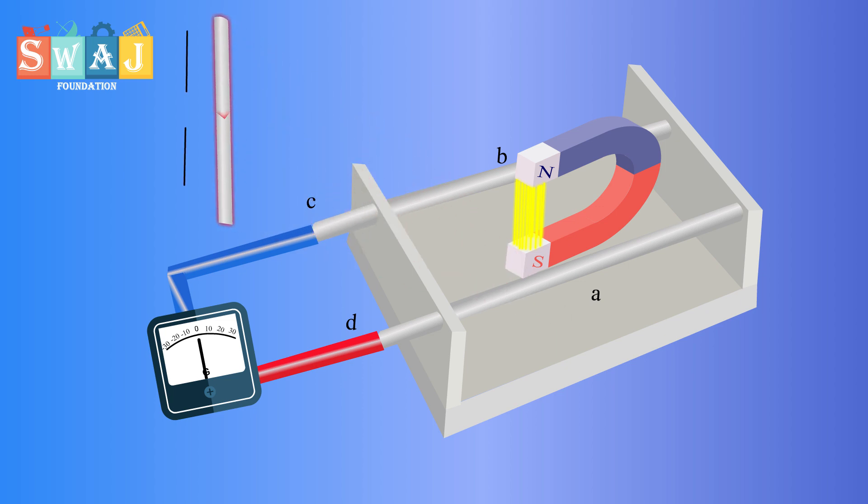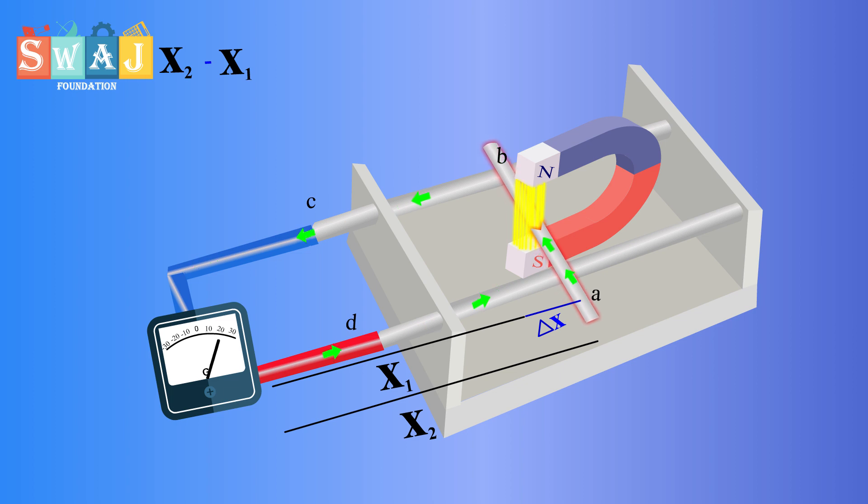Consider the conducting rod L is at position x1 from the galvanometer. As we move the rod towards right to position x2 in small time interval del t, the distance travelled by the rod in time del t is del x equals x2 minus x1.